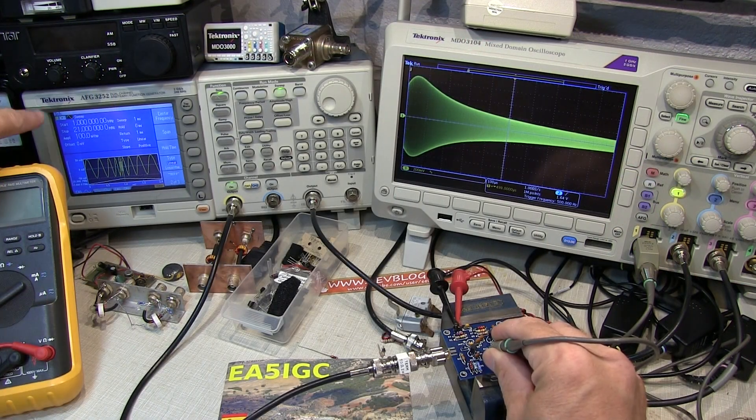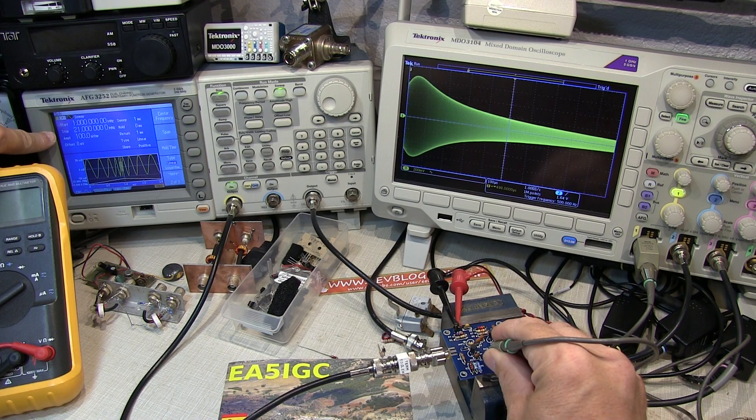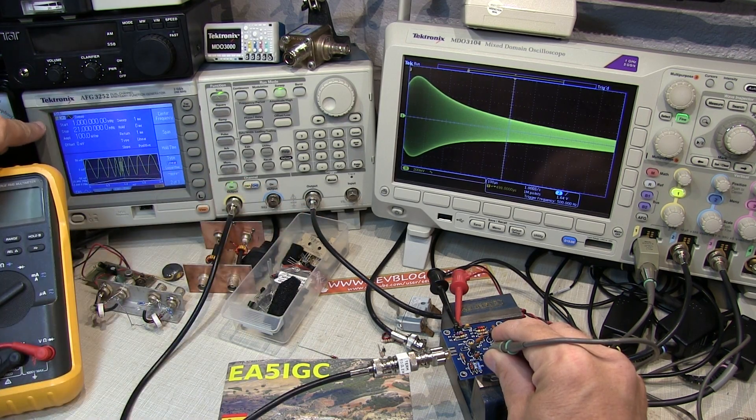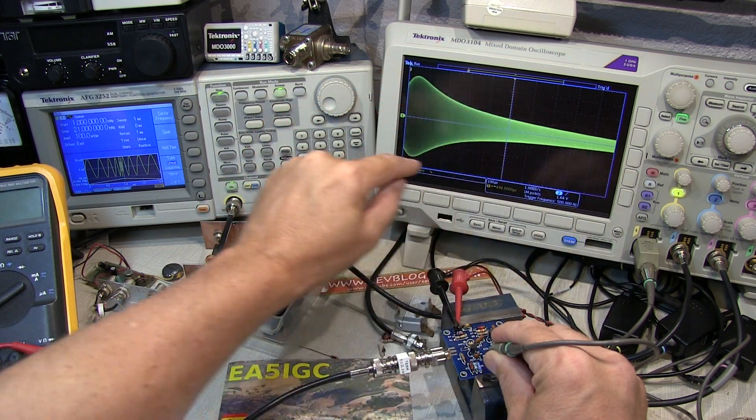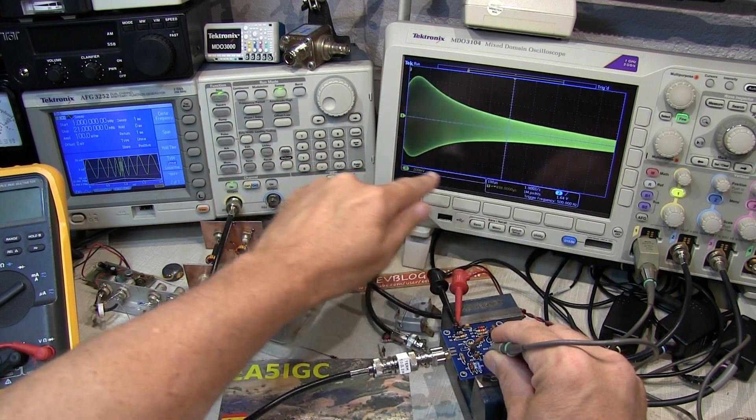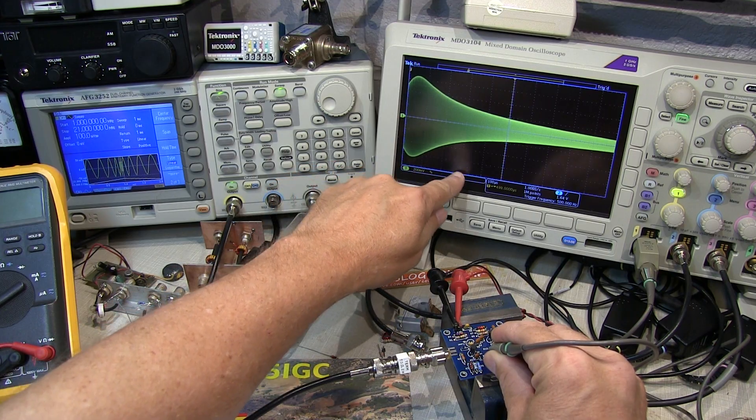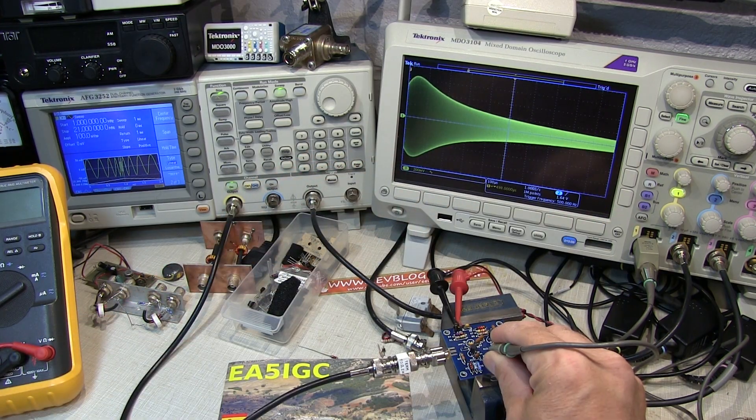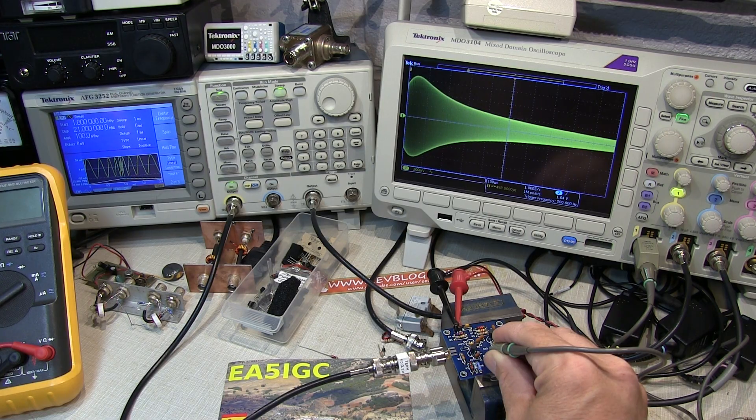Okay, the setup here is I've got the function generator set up to sweep from 1 MHz to 21 MHz. So I'm doing a 20 MHz sweep. And then I'm triggering the scope on the start of that sweep so that across the scope screen we can actually see the output of the amplifier as a function of frequency. Starting at 1 MHz and then 3, 5, 7, each division is 2 MHz because I've got a 20 MHz sweep across the screen.